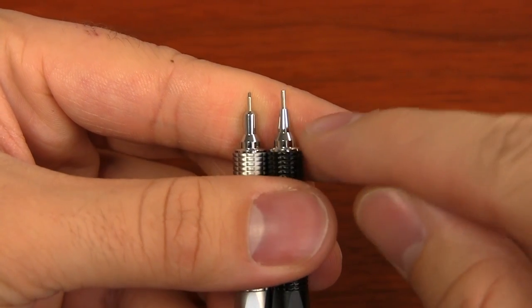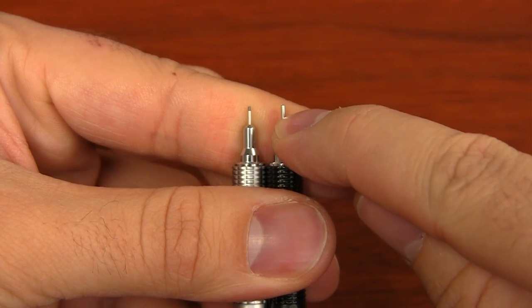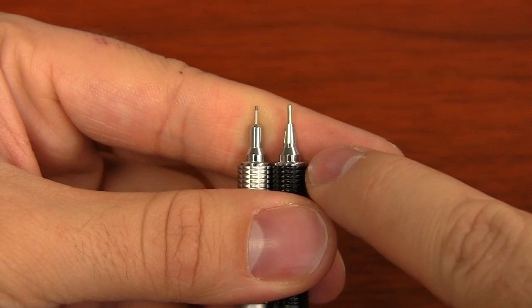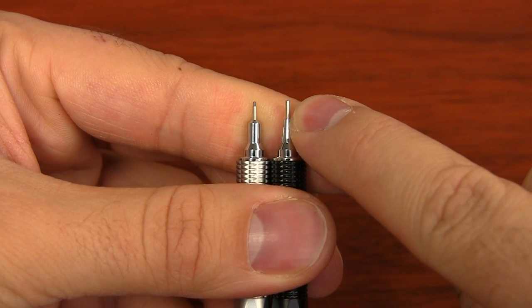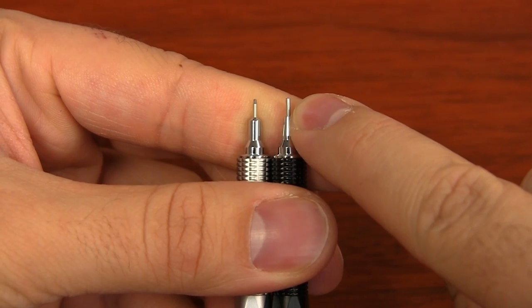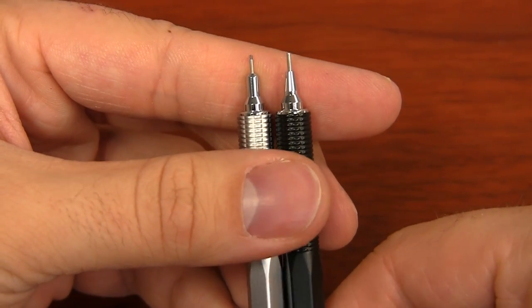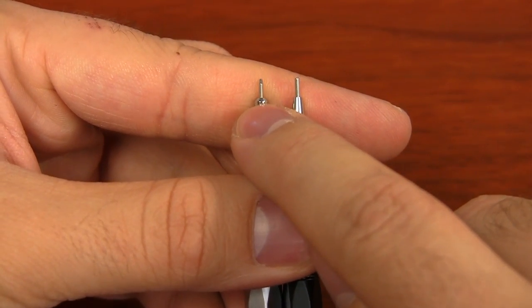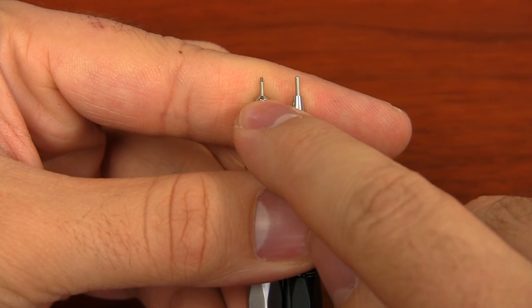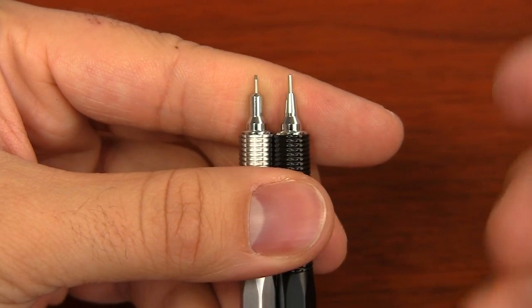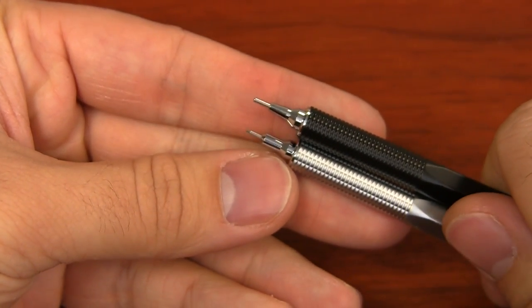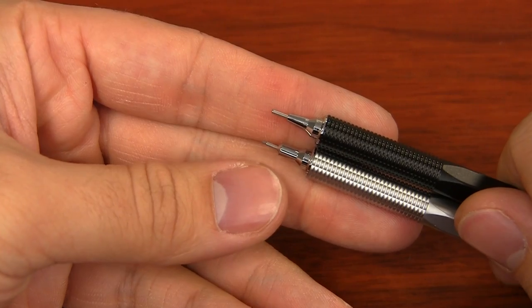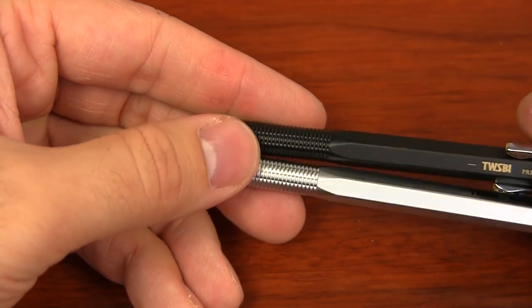And then the other difference is that the actual tip length is different on the two pencils. On the fixed one, it's just a hair under four millimeters. It's about 3.88 millimeters if you want to get that precise with it all. The retractable one only comes out to about 2.75 millimeters. So that's just a hair over one millimeter difference in length of the tip. If that makes a difference to you, now you have that information.